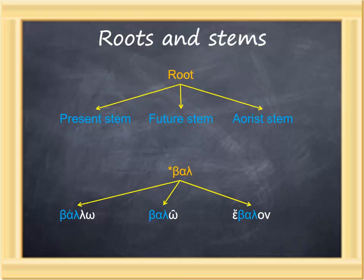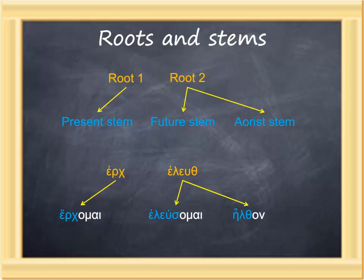Some words have more than one root, and a particular root can yield a particular stem. For example, the verb erchomai, meaning I come or go, has two roots: erk, behind erchomai; and eleuth, which is behind eleusomai and also behind elthon, the aorist form.